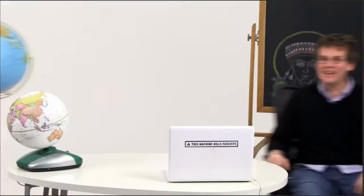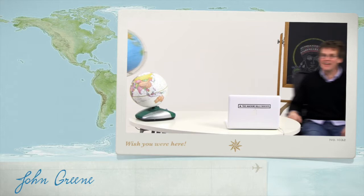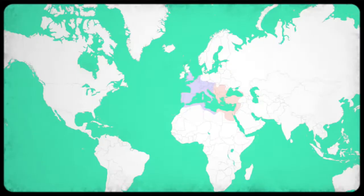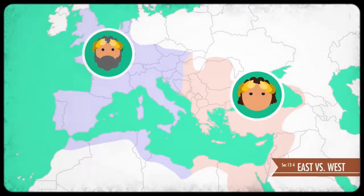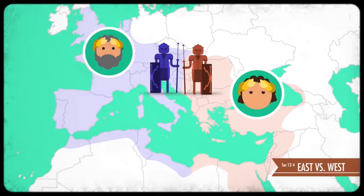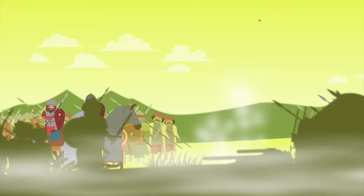Hi there, my name is John Green, this is Crash Course World History, and today we're going to talk about the fall of Rome. There was a lot of continuity between the old Western Roman Empire and the new Eastern one. Politically, each was ruled by a single man who wielded absolute military power. War was pretty much constant as the Byzantines fought the Persian Sasanian Empire and then various Islamic empires.